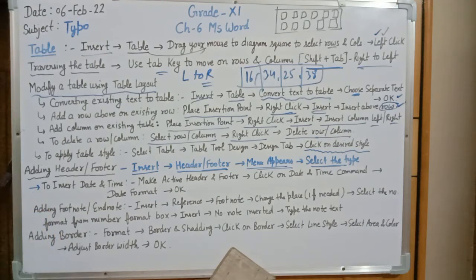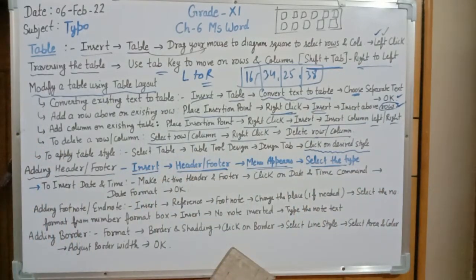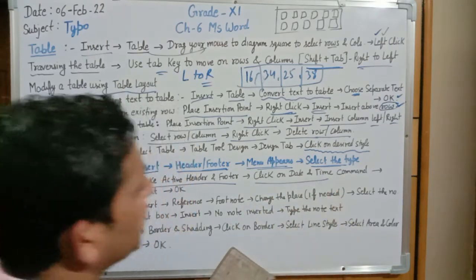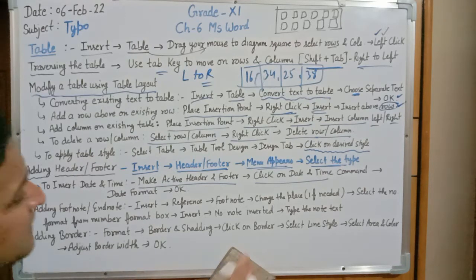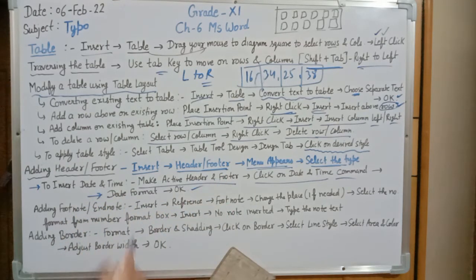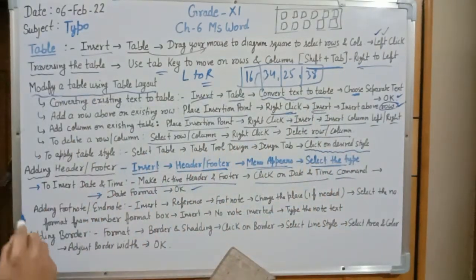To insert the current date and time in your header and footer: first make the header and footer active — it should be in active mode, not hidden. Then click on the Date and Time command, select the date format (for example, year first, month first, or date first), and press OK.